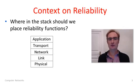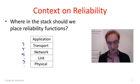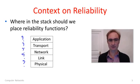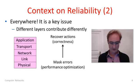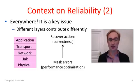I'll give you a little bit of context on reliability in general before we jump into retransmissions. An important question is where in the stack we should put reliability functions. We have a whole stack — should reliability functions go at the physical layer, the link layer, the network layer, the transport layer, or the application layer? The answer is essentially that reliability functionality should go everywhere in the stack. Reliability is one of those key issues for networks.